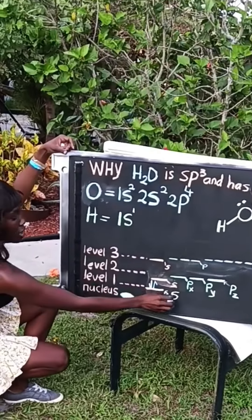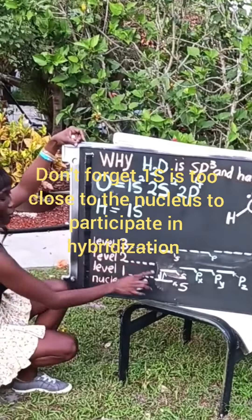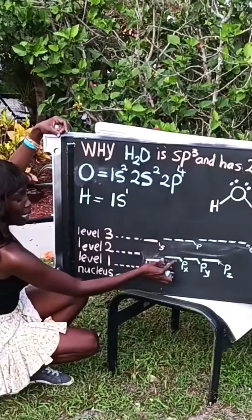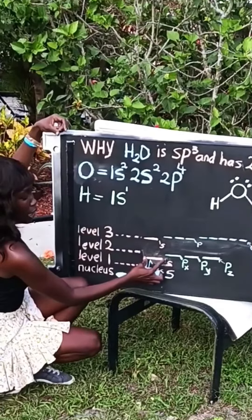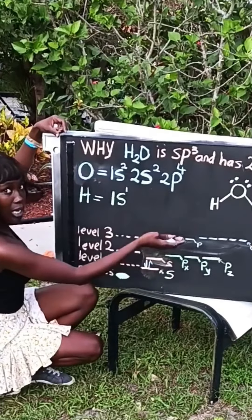So level 1 we know just has the 1s and each level holds two electrons opposite spin, and level 2 has s and a p. And I did this on purpose because your s is still at a lower energy level than your p, your p is at a higher energy level.